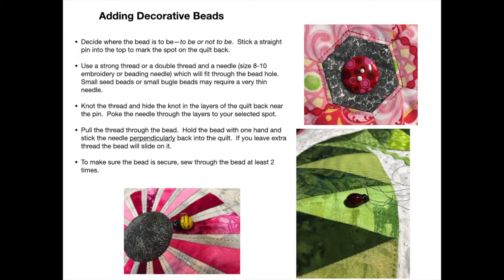When adding decorative beads, first you need to decide where the bead is going to be, so I stick a straight pin into the top of the quilt to mark the spot on the quilt back. Then use a strong thread, a double thread, and a needle which will fit through the bead hole. You can find size 8 to 10 embroidery needles or beading needles. If you're using very small seed beads or small bugle beads, you will probably need a very thin needle. Knot the thread and hide the knot in the layers of the quilt back near the pin, then poke the needle through the layers to your selected spot and pull the thread through the bead.